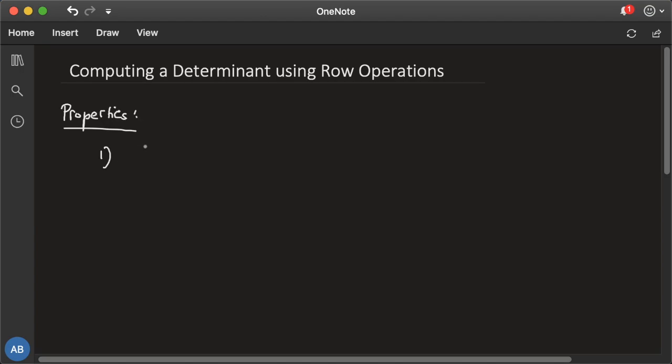Property one tells us that a determinant is a linear function of each row separately. That is to say, if two rows are added with all other rows remaining the same, the determinants are also added.